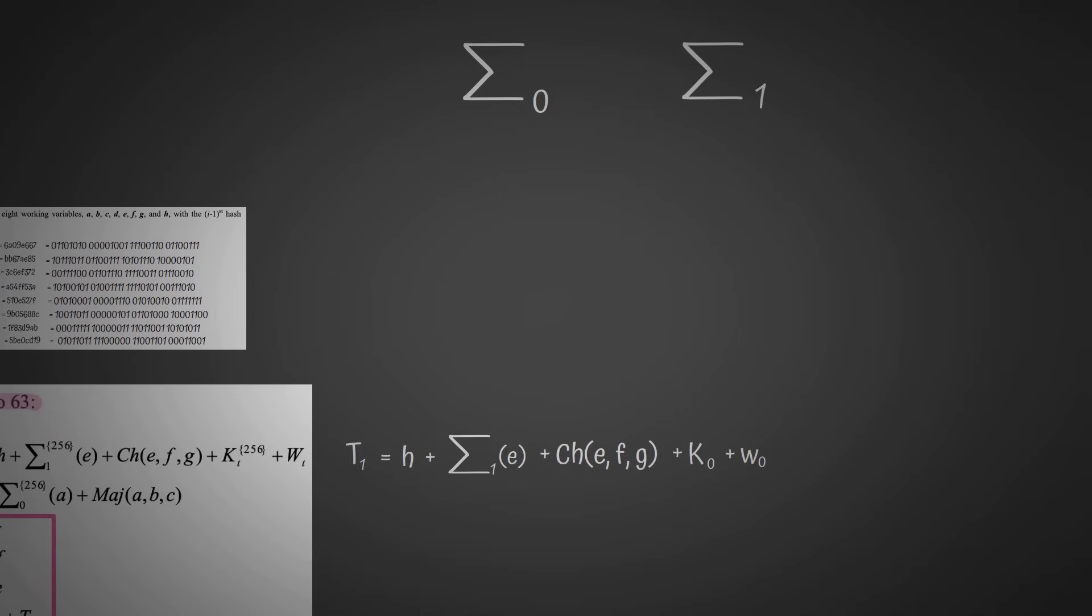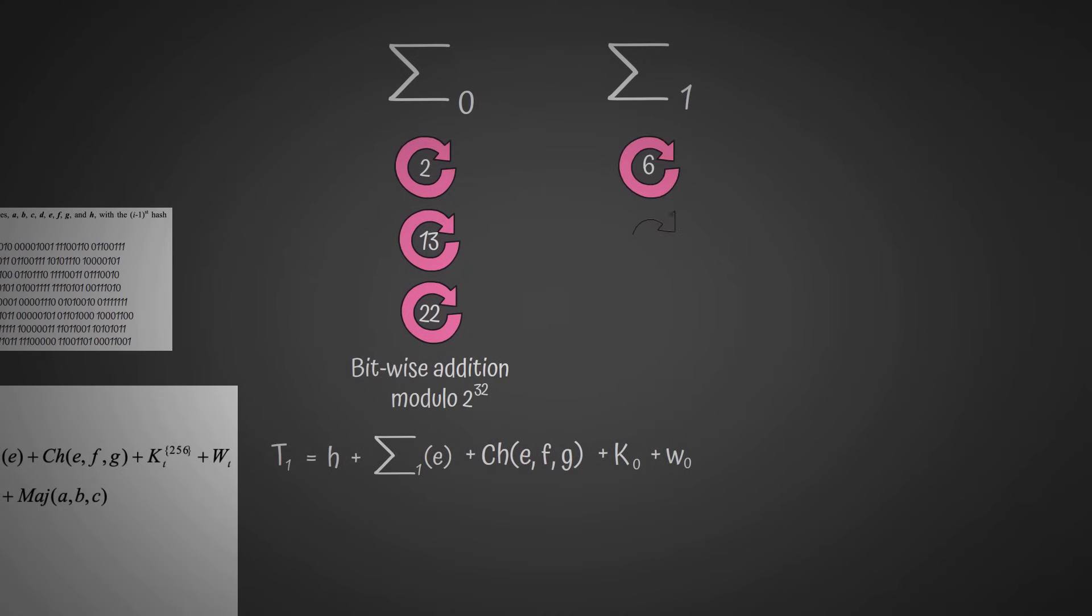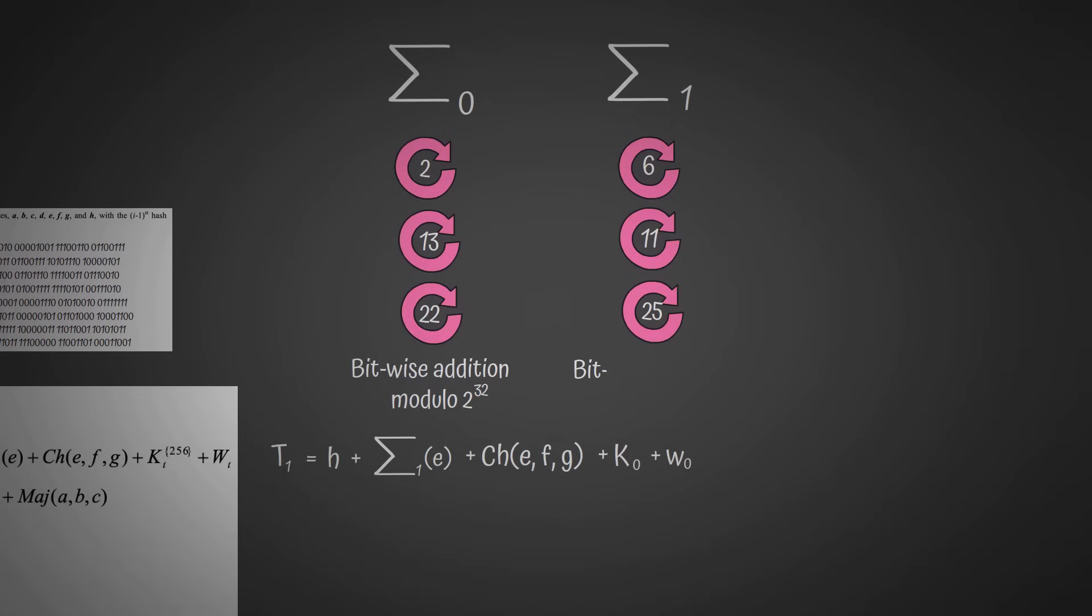So these capital Sigmas, Sigma 0 and 1, they're defined pretty much the same as their lowercase counterparts, but instead they don't have a right shift value, they're just all right rotations, followed by a bitwise addition modulo. I should not say 2 to 32, that should say 2, but I'm not going to change that now. So yes, the Sigma 0, we have 2, 13, 22. Sigma 1, we have 6, 11, 25.